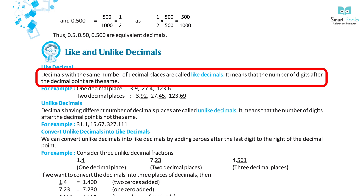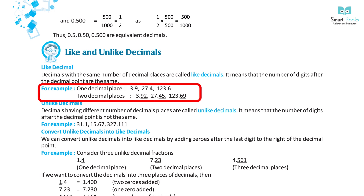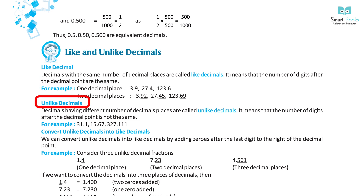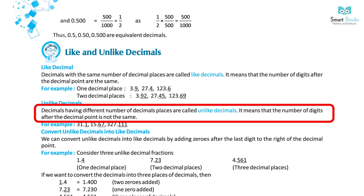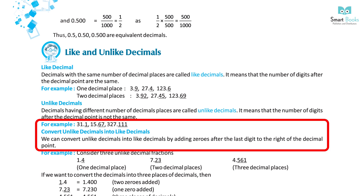Like and Unlike Decimals: Like decimals are decimals with the same number of decimal places — meaning the number of digits after the decimal point is the same. For example, with 1 decimal place: 3.9, 27.4, 123.6. With 2 decimal places: 3.92, 27.45, 123.69. Unlike decimals have different numbers of decimal places. For example: 31.1, 15.67, 327.111.